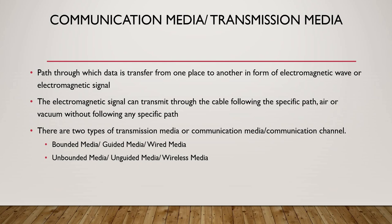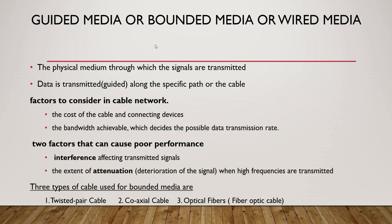Guided media, or bounded media, or wired media, is the physical medium through which signals are transmitted along a specific path or cable. Factors to consider in cable networks include: the cost of the cable and connecting devices; bandwidth achievable, which decides the possible data transmission rate; interference and disturbance, which can cause poor performance; and attenuation — the deterioration of signal when transmitting over long distances or at very high frequency.